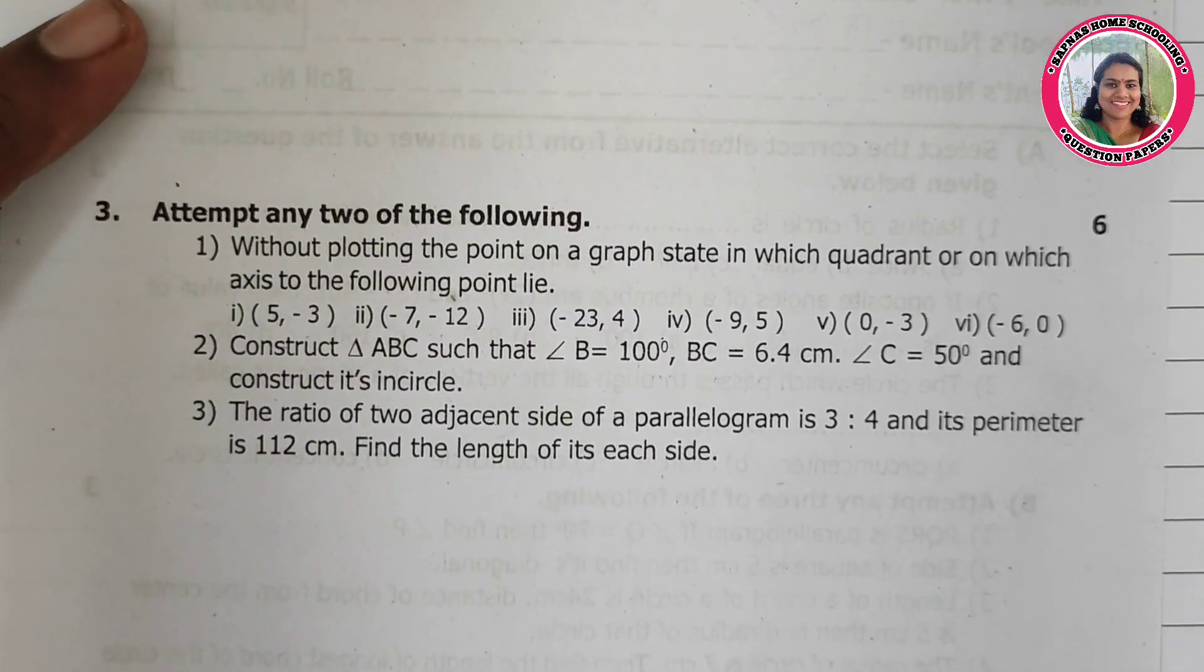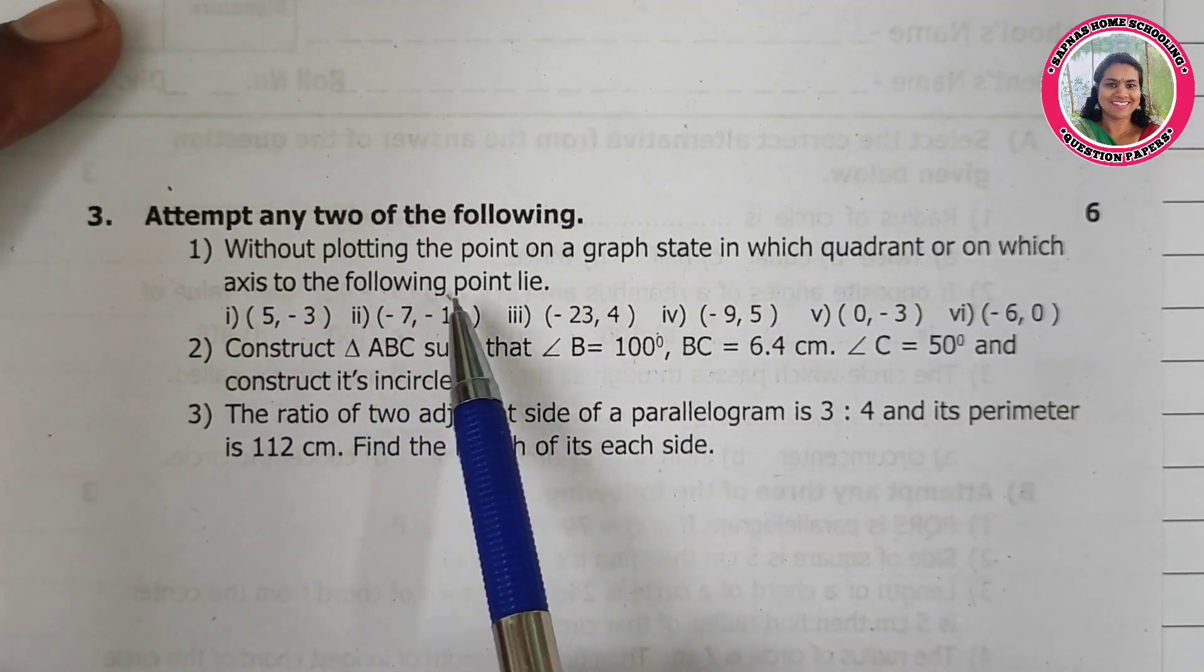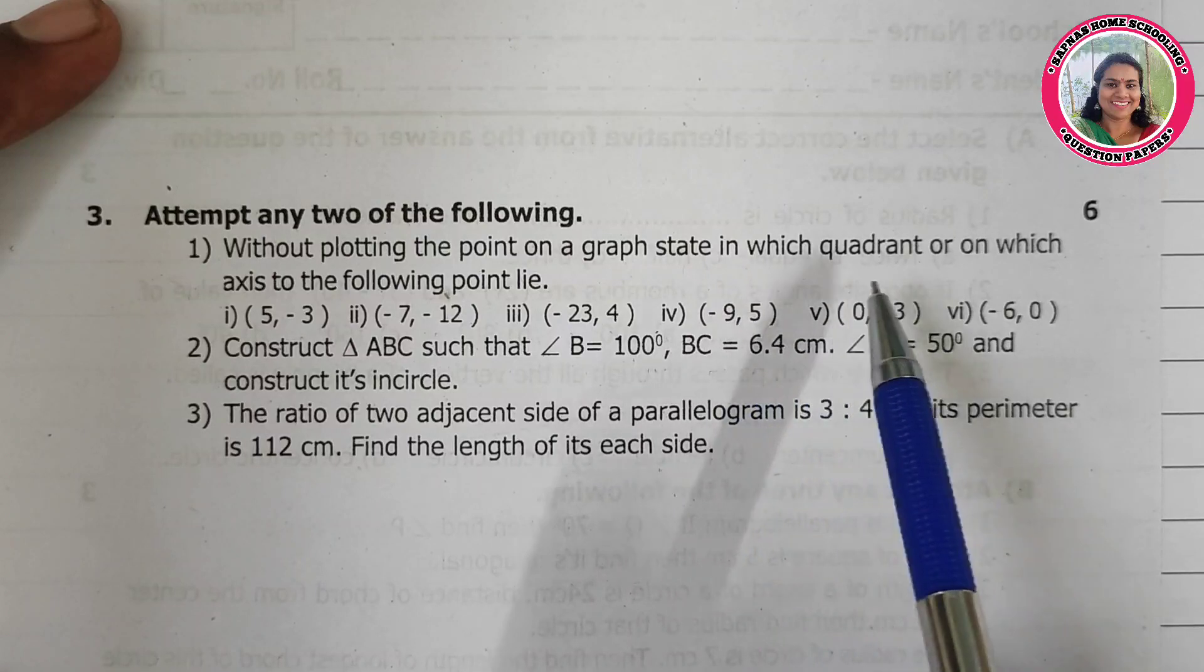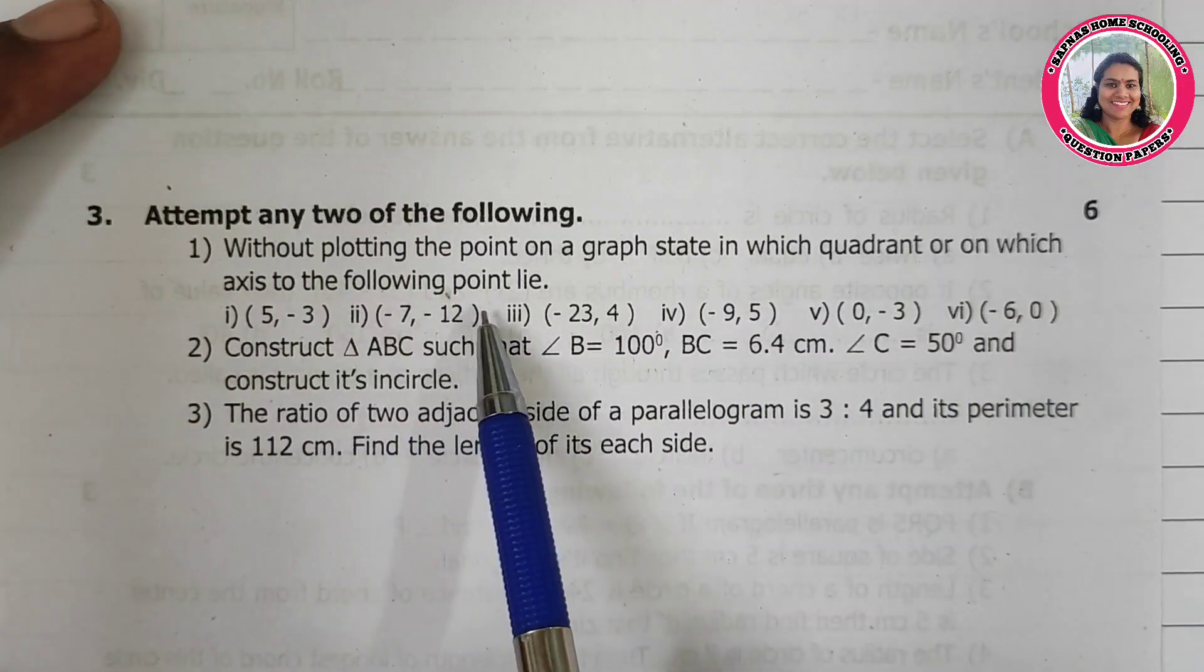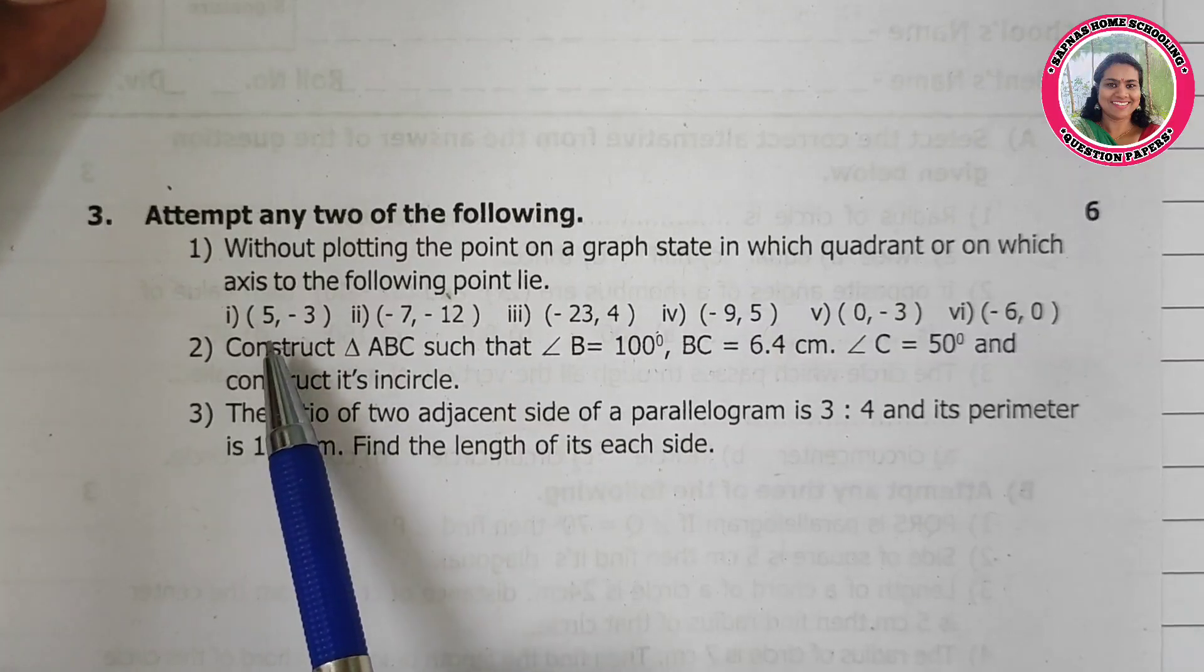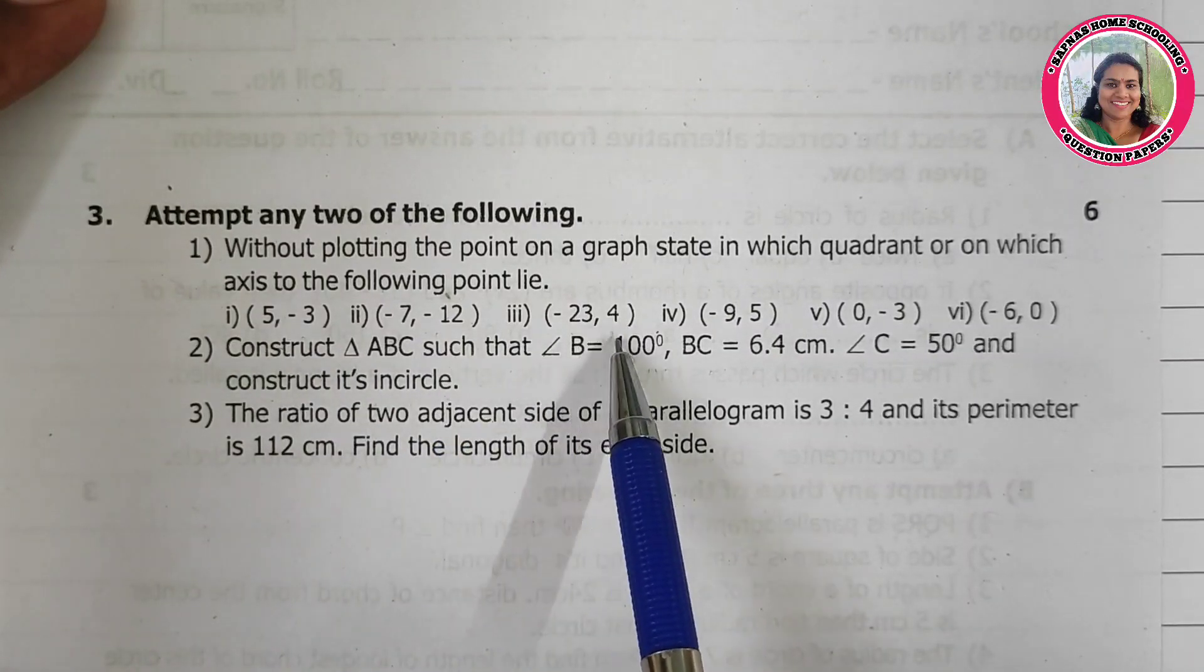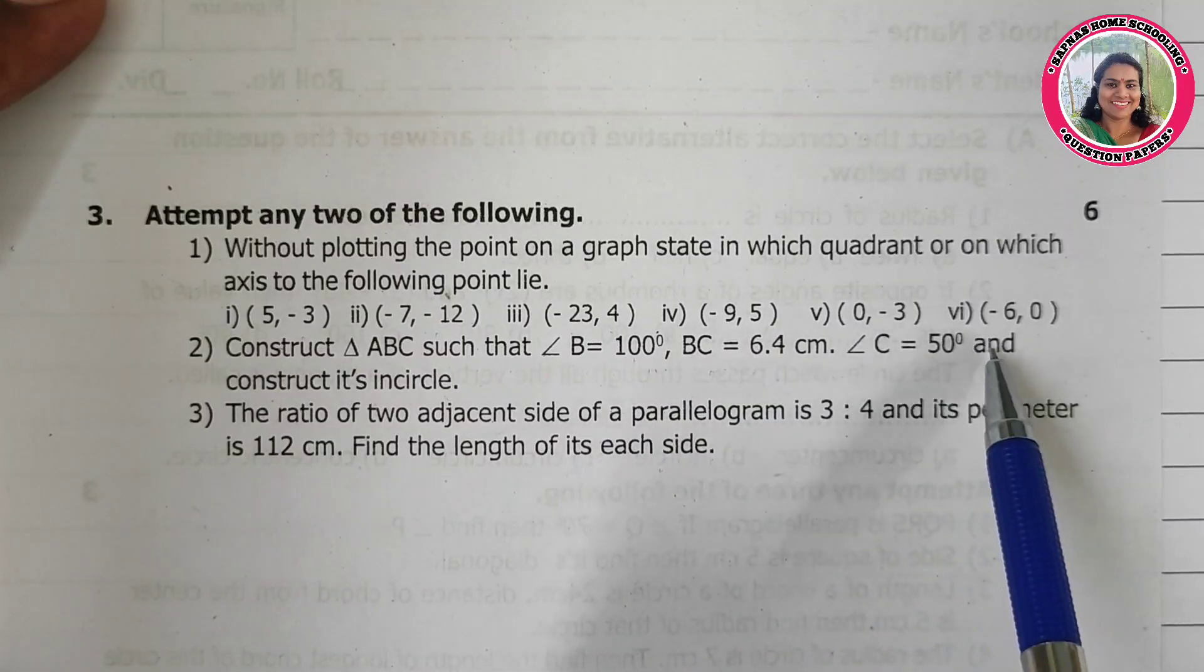On page 2, third question: Attempt any 2 of the following. Without plotting the point on a graph, state in which quadrant or on which axis do the following points lie: (5, -3), (-7, -12), (-23, 4), (-9, 5), (0, -3), and (-6, 0).